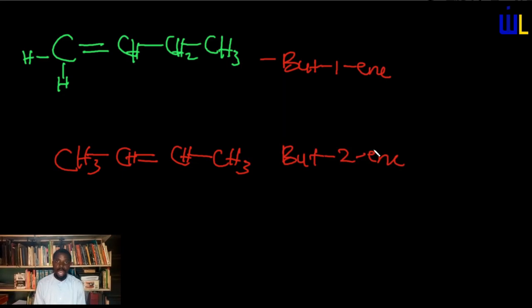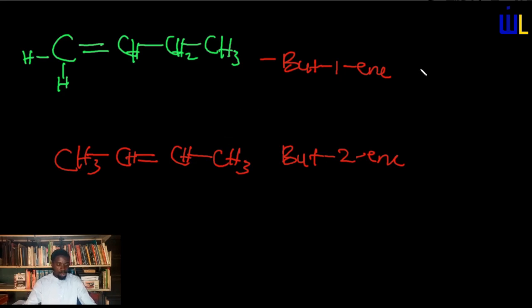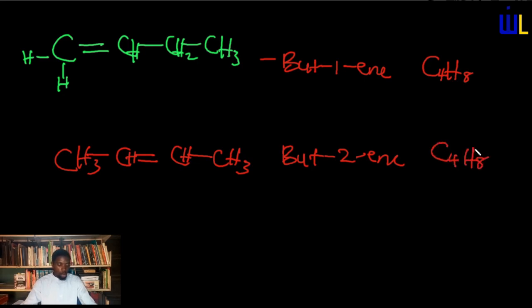We've actually had videos which describe how to name organic compounds, so please do well to look up those videos. You will notice that they are both different compounds. However, they have the same molecular formula — four carbon atoms, C4, and eight hydrogen atoms, H8. Both of them are different compounds: this is but-1-ene and this is but-2-ene. However, their molecular formulas are the same, simply because we changed the position of the multiple bond in the chain. That form of isomerism is referred to as positional isomerism.